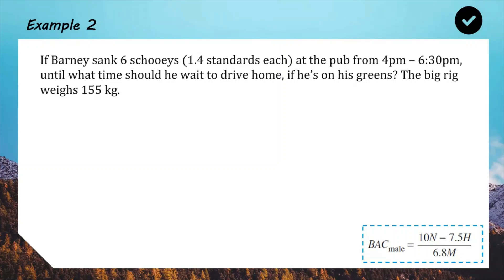Let's work through it together in case you're struggling. We have the three things we need, the number of drinks, the hours, and the mass. So, once again, we've got six drinks, and those drinks are 1.4 standards each. So, we'll do six times 1.4, which is 8.4. Hours is from 4 to 6.30 p.m., so that's 2.5 hours. And the mass is just 155 kg. We're going to sub those three pieces of information into our formula, our BAC formula. Again, we're just doing the male one, because Barney's a male name. We put that through our calculator, and we get 0.062, and that's, again, to three decimal places. So, there's an answer for Barney's BAC.